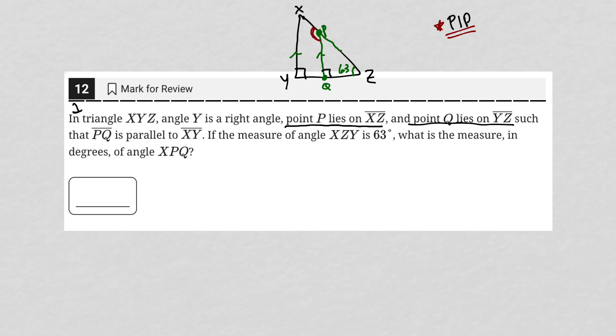Therefore, this angle here, QPZ, this angle right here, must be 27 degrees. Because 90 plus 63 plus 27 gives us 180 degrees, which we know the sum of all three angles has to be.